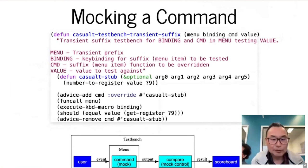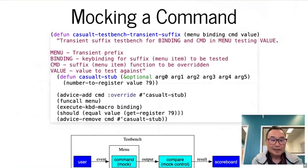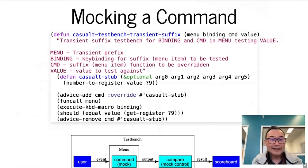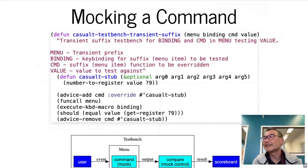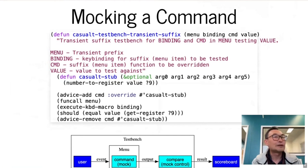Looking at the block diagram, where you see the block in the menu called 'command mock,' I'm using the elisp functionality of advice, which allows you to monkey-patch or override the existing behavior of a function. In that function, I've created a stub function which I've called `casualty-stub`. I've passed a bunch of optional arguments — fairly crude but effective — to basically override functions, because I don't know a priori how many arguments there are to a command invoked via a transient menu.